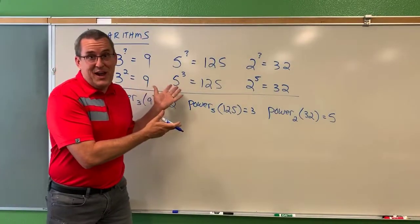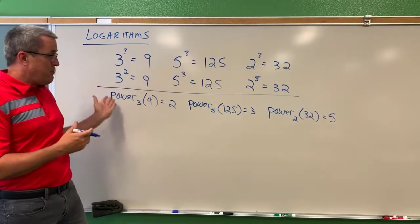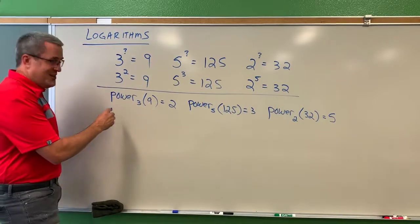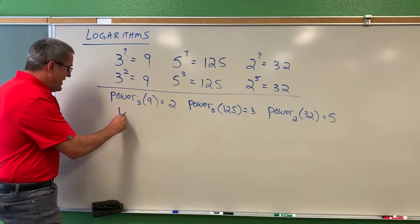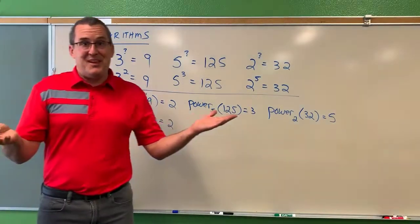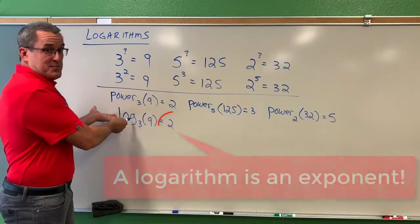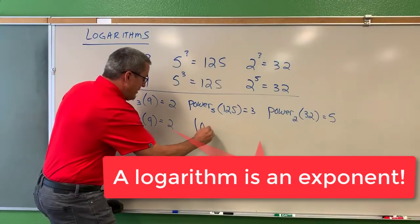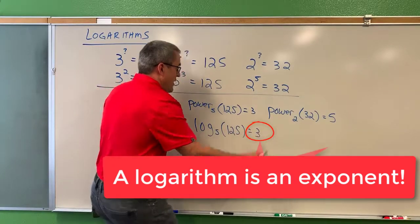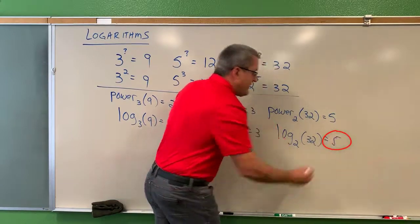Now, maybe if these things had been invented today, this would be exactly what we would call them. We wouldn't call them logarithms. We would call them powers. But the reality is they're called logarithms from about the 1600s on. And so we don't say power base three. We say log base three of nine is two. But what you might just think going forward is when you see log, just think, what's the power? What's the exponent on three that gives nine? What's the exponent? What's the power on five that would produce 125? Well, it's three. What's the power on two that produces 32? Well, it's five.